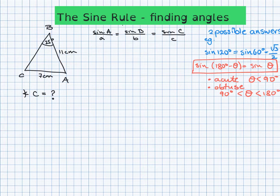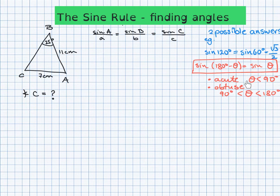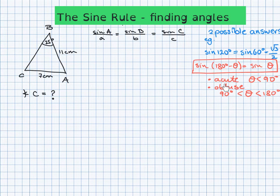When we use the sine rule in order to find angles, we do have to be a little bit more careful because there are two possible answers. For example, sine of 120° and sine of 60° give the same answer on a calculator or unit circle. So we may have two different triangles — one where the angle is less than 90°, and an obtuse one where it's bigger than 90° but less than 180°.